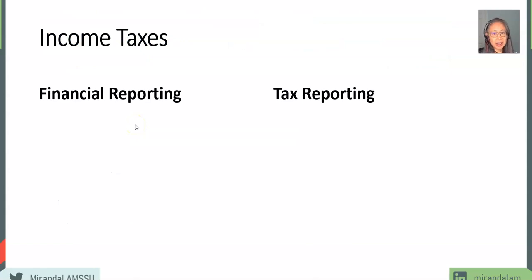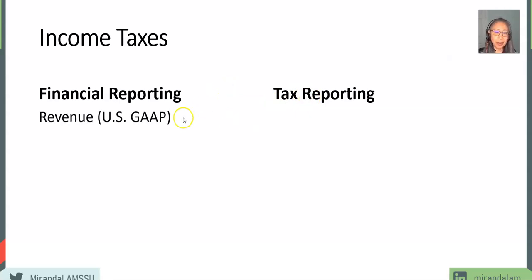Next, let's take a look at income taxes. This is another area with a lot of nuances that is not obvious when you just look at the financial statements. First of all, there are two types of reporting: financial reporting and tax reporting. Financial reporting follows U.S. GAAP — when do you recognize revenue, we need to follow those principles. The same is true for expenses.